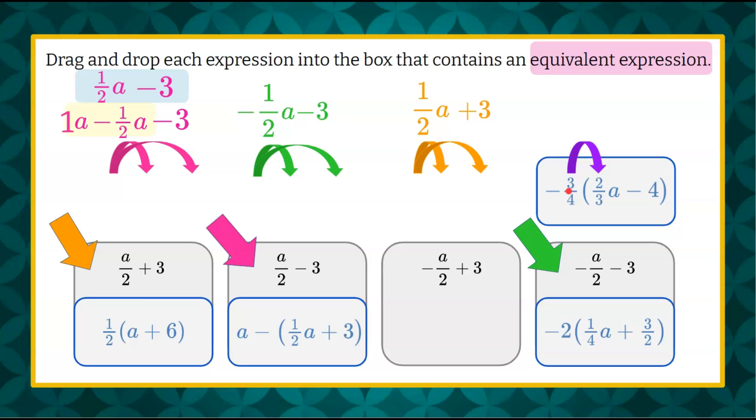Negative 3 fourths times positive 2 thirds a. 3 divided by 3 is 1, giving us negative 2 fourths a. Negative 2 fourths a simplifies to negative 1 half a. Now let's do negative 3 fourths times negative 4. Negative 4 divided by negative 4 is 1, giving us a positive 3.